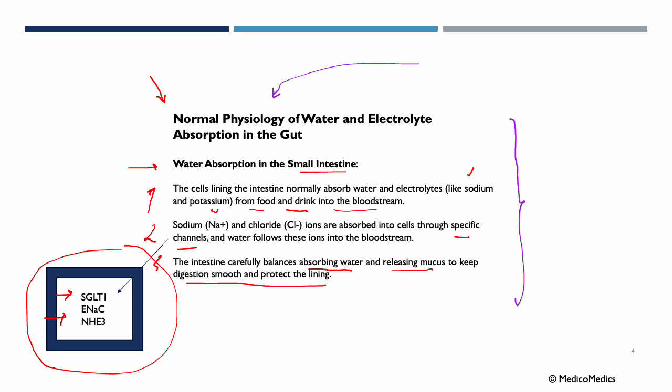In cholera, the cholera toxin reverses the normal process by triggering excessive chloride and sodium secretion into the intestinal lumen. Because water follows ions, as in normal physiology, when sodium or chloride leaves our cells, water then follows — but in reverse. This is what leads to the massive watery diarrhea that characterizes cholera, and in the coming slides we will dive into greater detail of the pathophysiology.